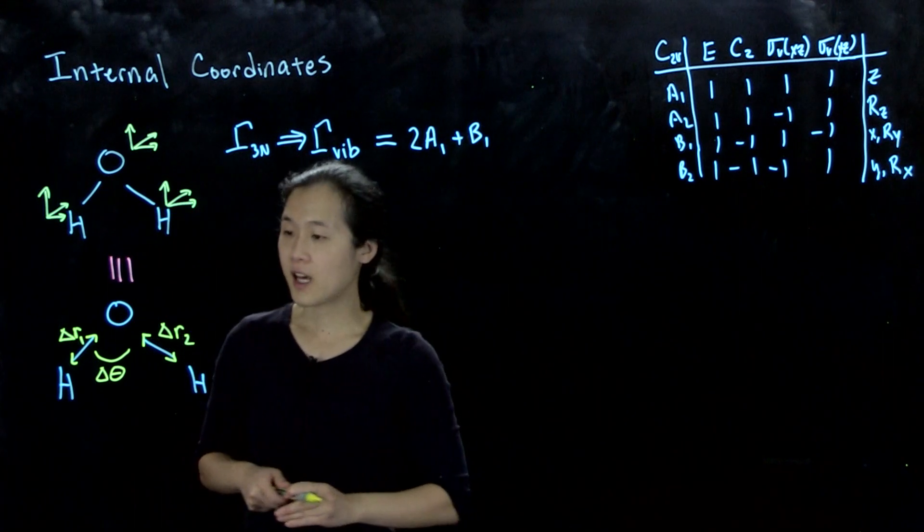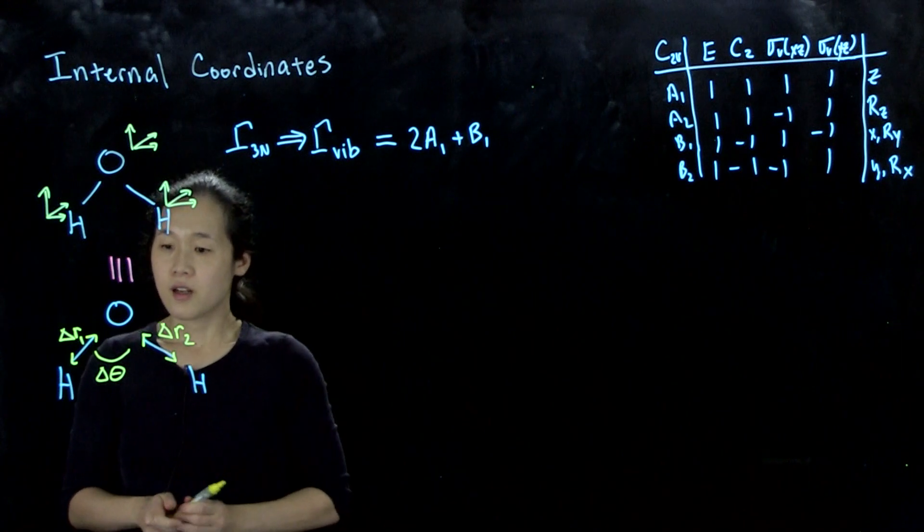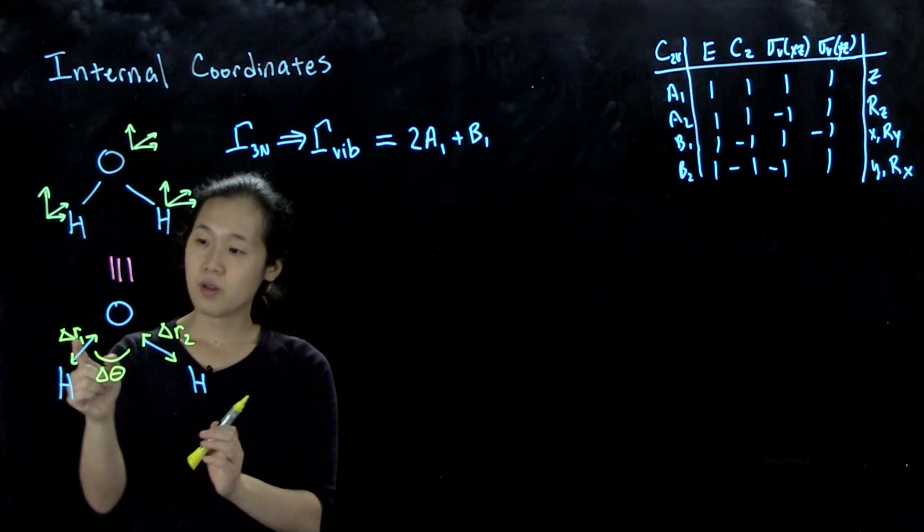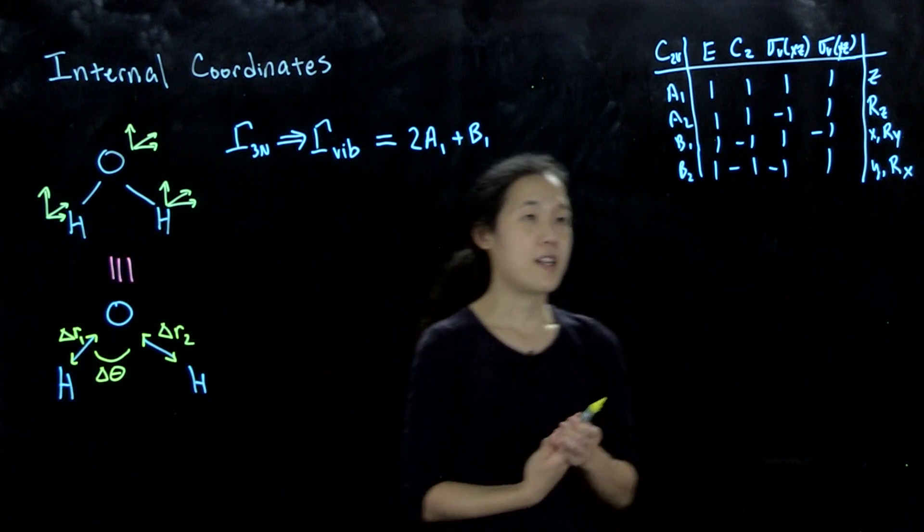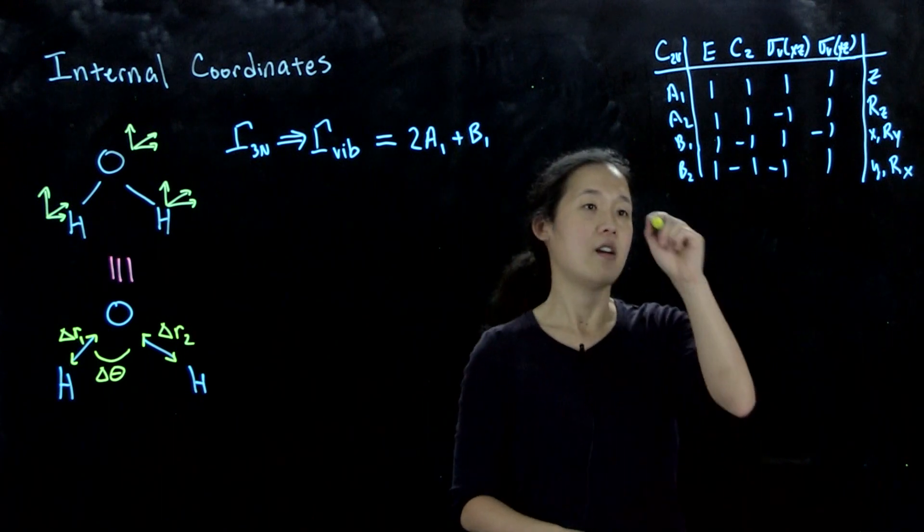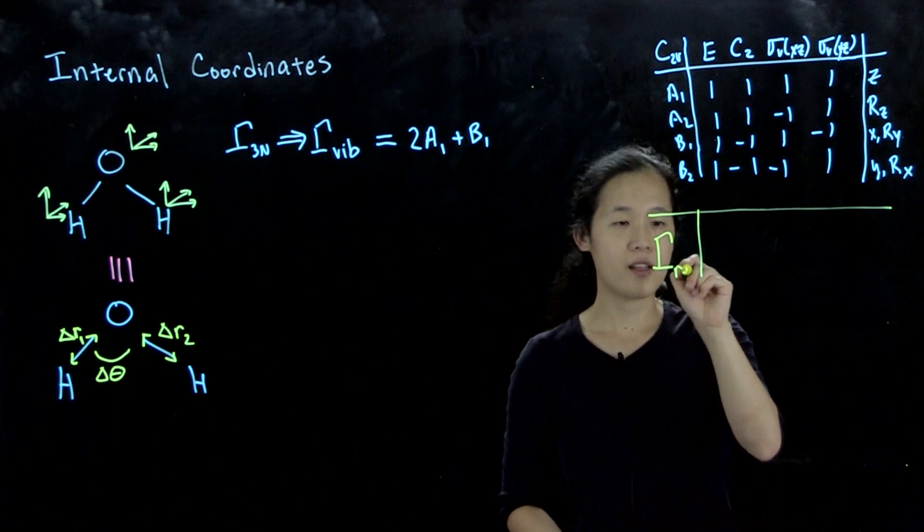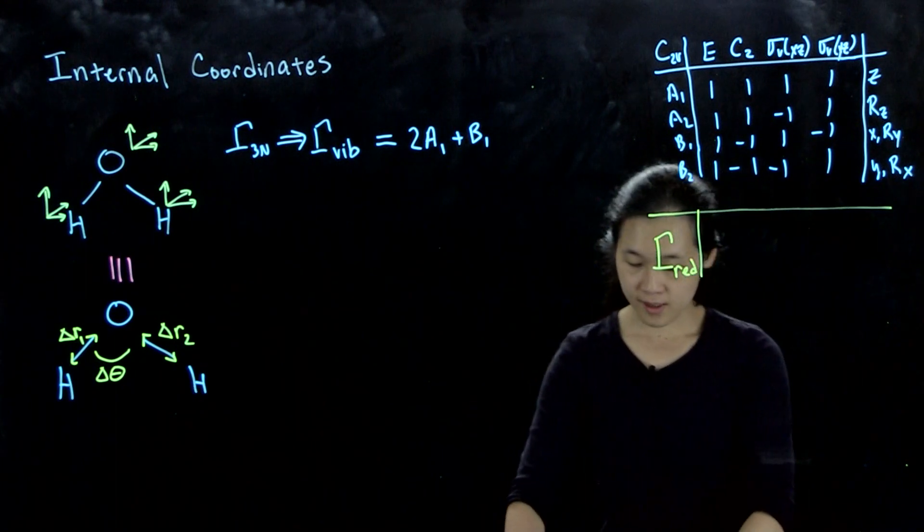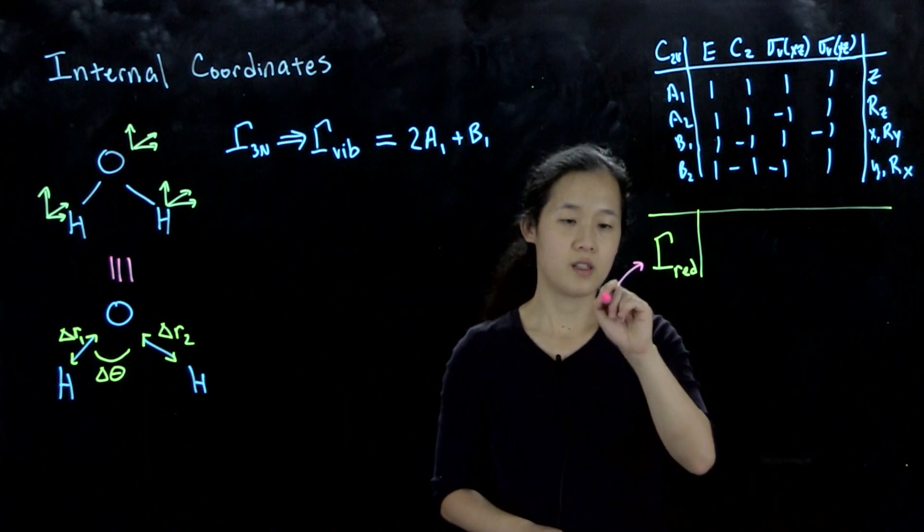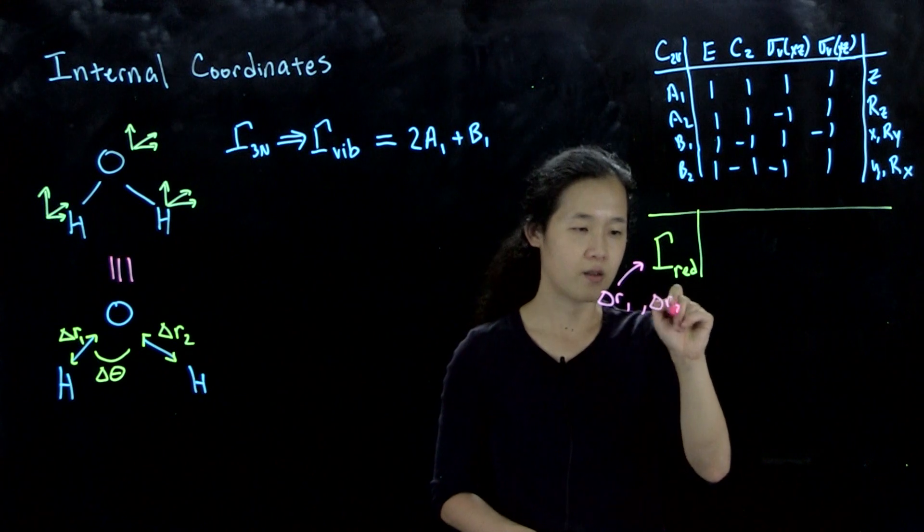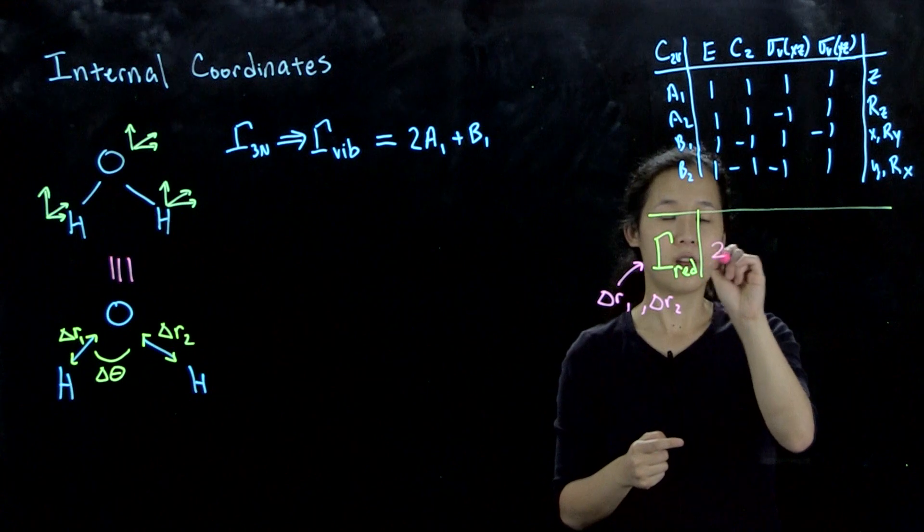For example, if we just look at our bond stretching, delta R1 and delta R2, you can see that they're related by symmetry. If we do a C2, you can move delta R1 onto delta R2, so we'll treat them as a group. Here's my character table. If I want to consider the symmetry of gamma_red, for delta R1 and delta R2, because we're treating two things, under E our basis set is 2.